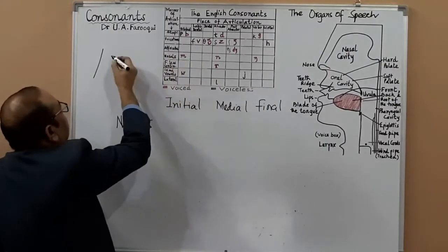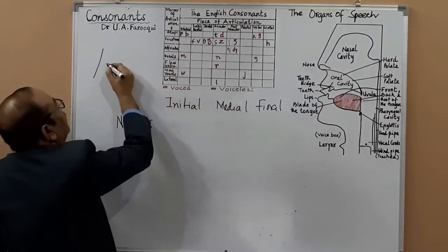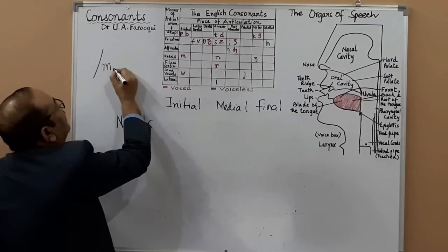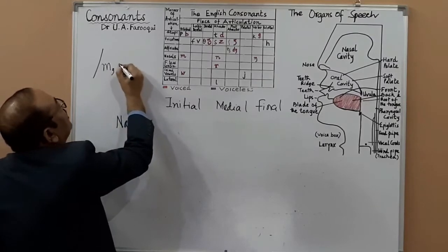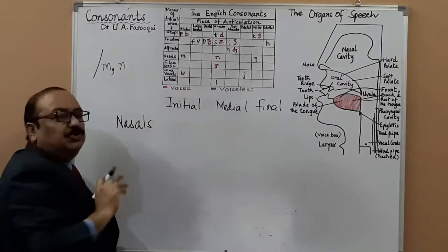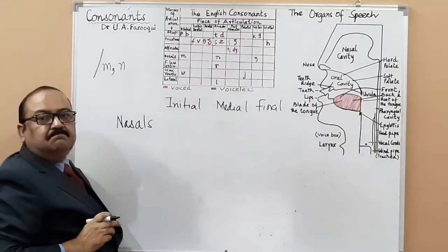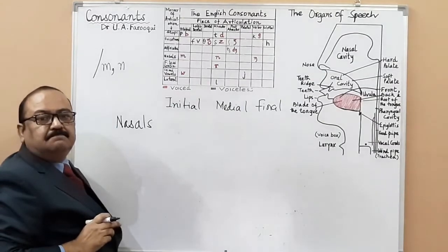There are three nasal sounds in English. The /m/ — you pronounce it like this: mmm. And here your lips are completely closed: mmm.